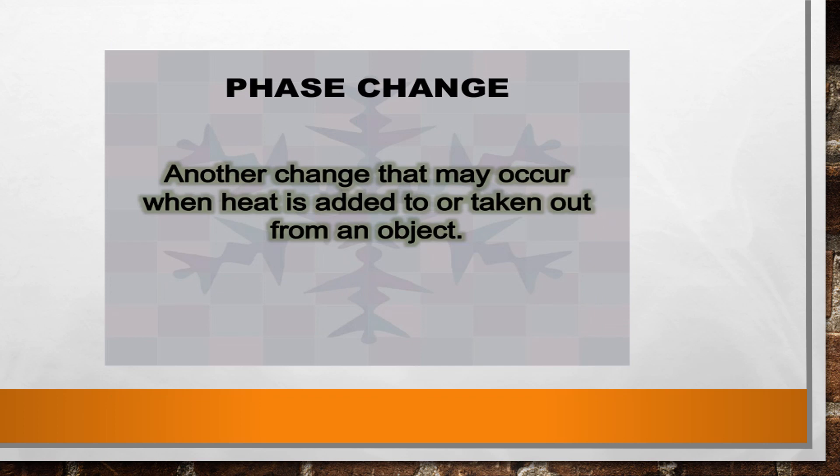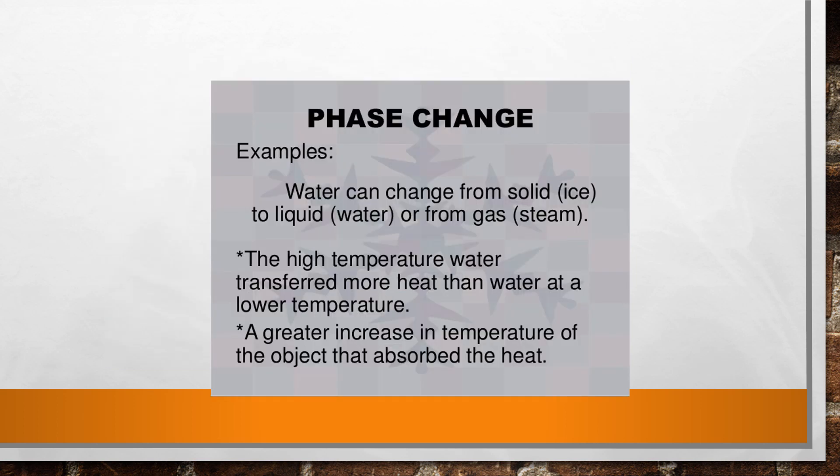Phase change — what is phase change? That is the change from solid, liquid, or gaseous state that may occur. For example, water can change from solid to liquid or from liquid to gas. It's a very simple example that you have been studying right from standard five. High temperature means water has more thermal energy than water at a lower temperature. The greater the temperature, the more heat the object absorbs, and its temperature increases.